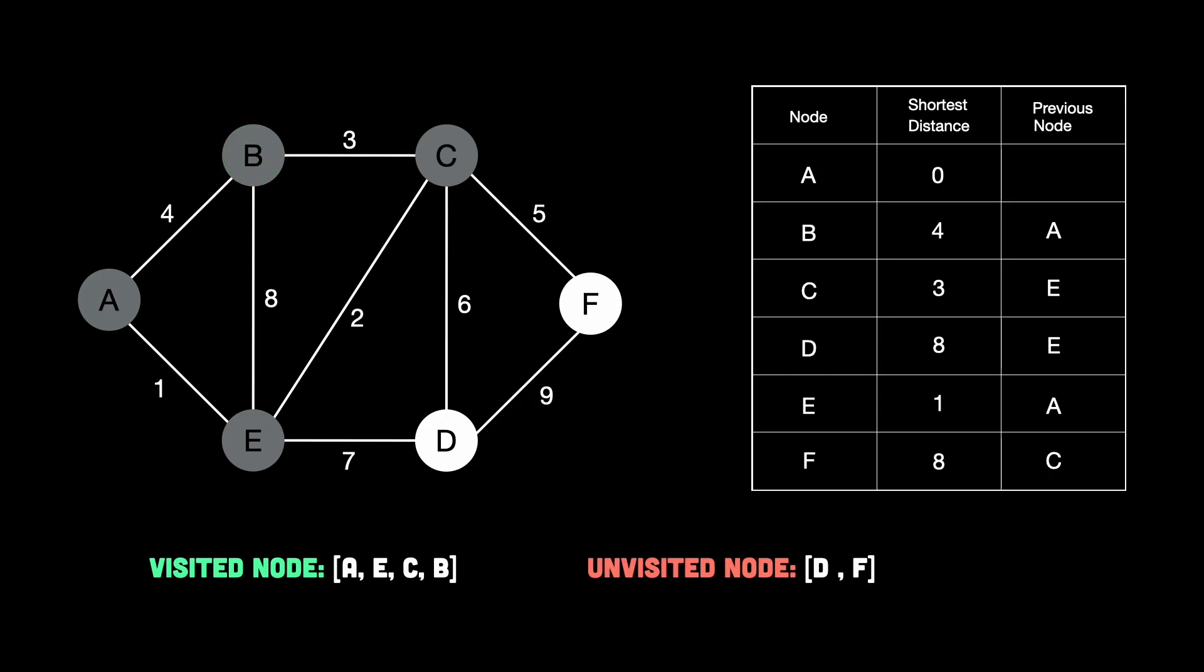Now again, the same process. We choose the unvisited node with the shortest distance. We are left with D equals 8 and F equals 8. Both have the same shortest distance, meaning it's a tie. Now at this point, we only care about reaching F, since that's our destination. And the rule of Dijkstra says, as soon as you pick a node as the smallest, its distance is final. So if we pick F right now, we are done.